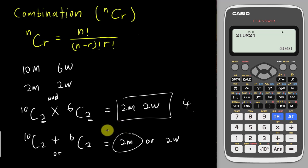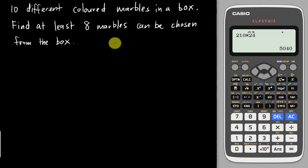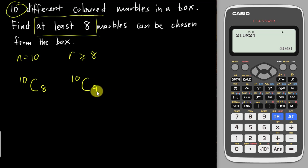If you're able to see the difference, I'm going to go into an exam type question. This question says 10 different colored marbles in a box. Find at least 8 marbles can be chosen from the box. There are a few keywords. The first keyword is at least 8 marbles. You have 10, so your n is 10, but your r value must be at least 8. I'm going to list out all the possibilities. First possibility: I have 10 marbles, I will choose 8. Because it's at least 8, I cannot stop here. 10 marbles I can choose 9. 9 is more than 8, so it's fine. Then 10 marbles choose 10, because they said at least 8.